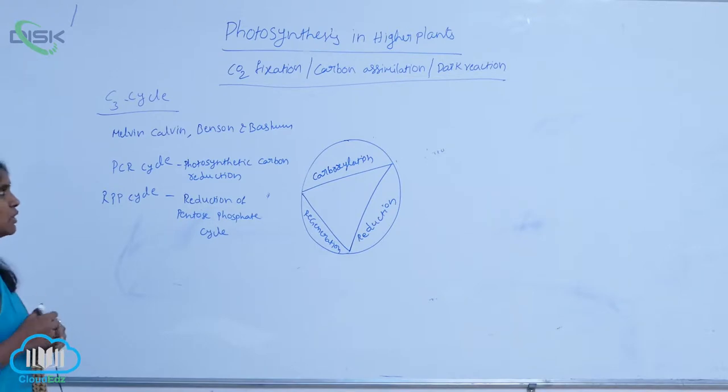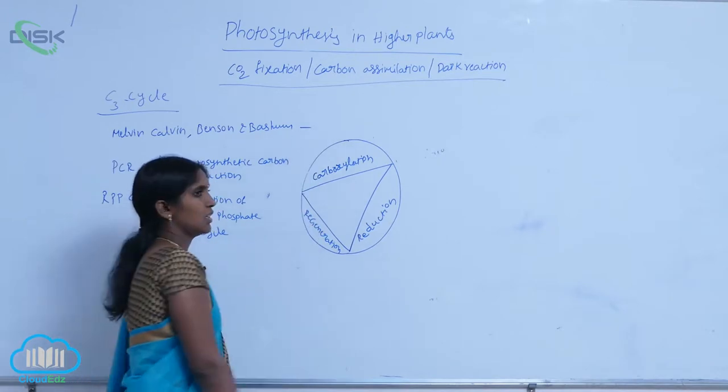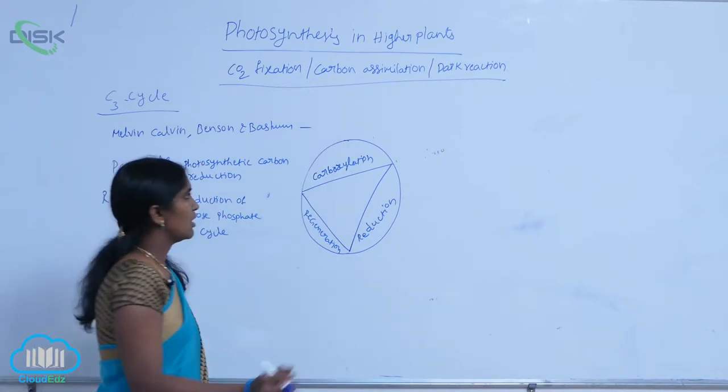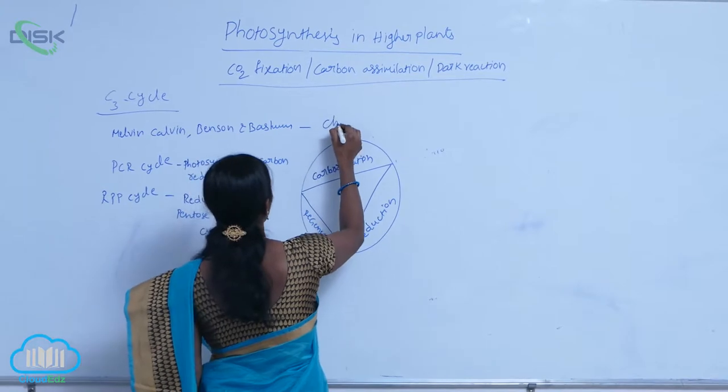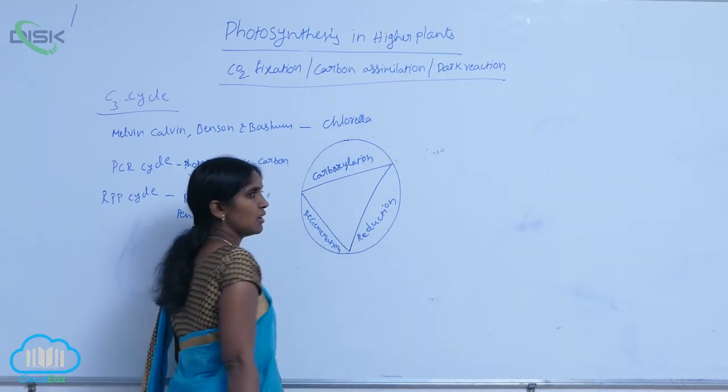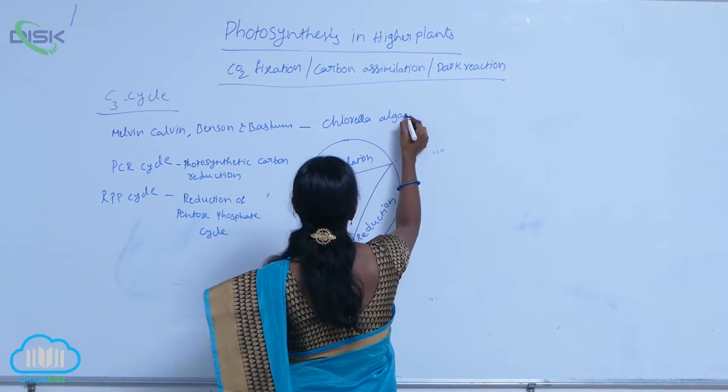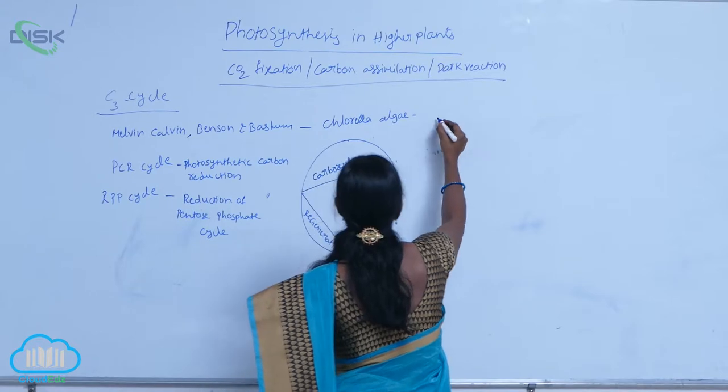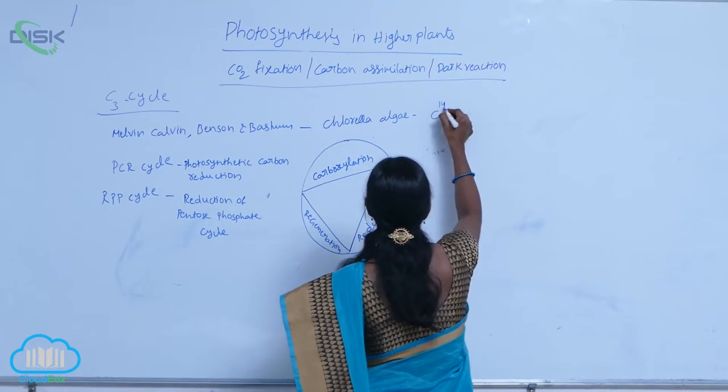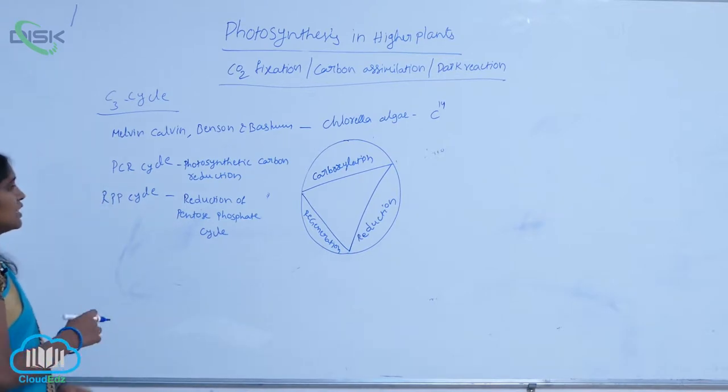Benson and Basham. They worked out the photosynthetic reactions on Chlorella pyridinosa algae by using a heavy isotope, C14, and determined the C3 cycle stages.